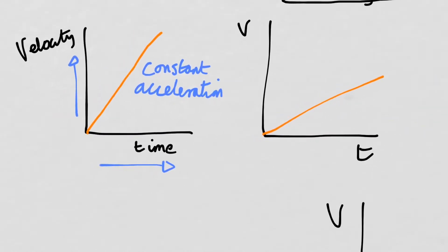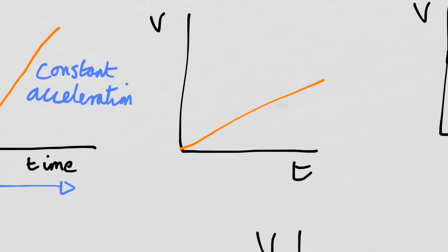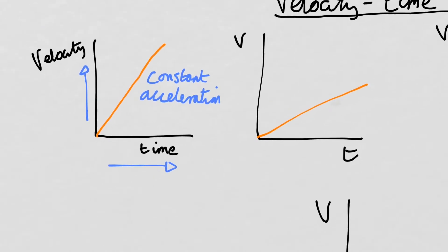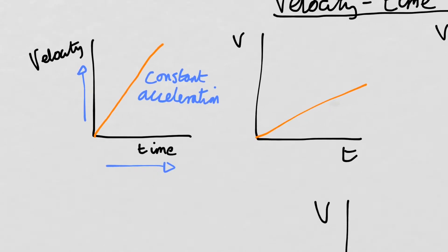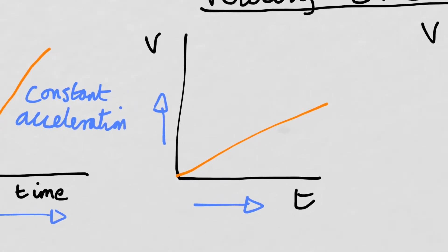In this second graph you can see it's very similar. Again as time goes on velocity goes up, so it's still constant acceleration — except this time velocity isn't going up by quite as much. So this is a lower constant acceleration.